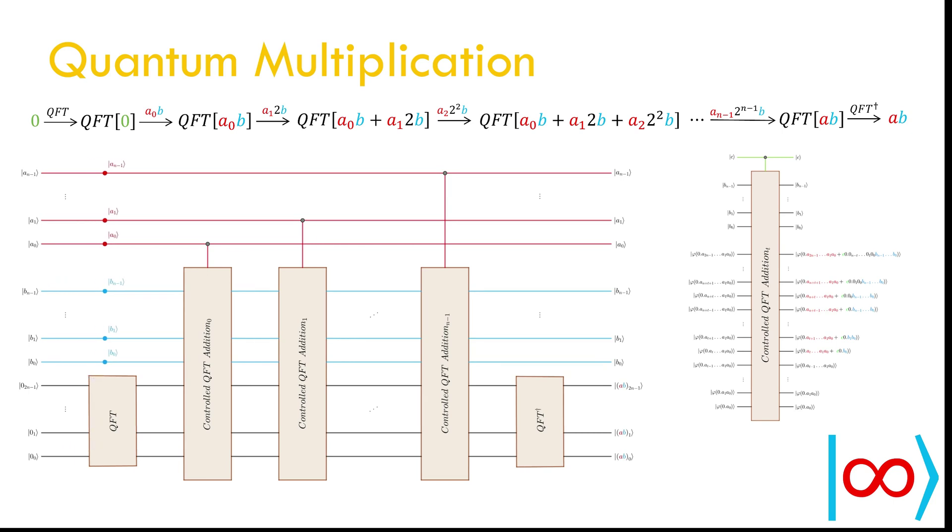Finally, using N controlled addition gates, we can add N terms 1 by 1 to obtain multiplication. First apply the quantum Fourier transform to two N qubits each in state 0. Then successively apply controlled addition gates controlled by the bits of A. Finally apply inverse Fourier transform to obtain the desired product. This concludes the algorithm for quantum multiplication.